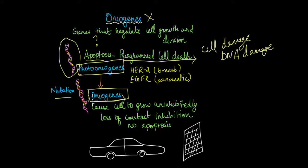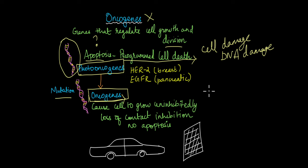When proto-oncogenes are mutated, the proteins produced are no longer able to regulate cell growth, cell division, or even apoptosis. That is what causes cells to grow uninhibitedly and uncontrollably, leading to the development of cancer.